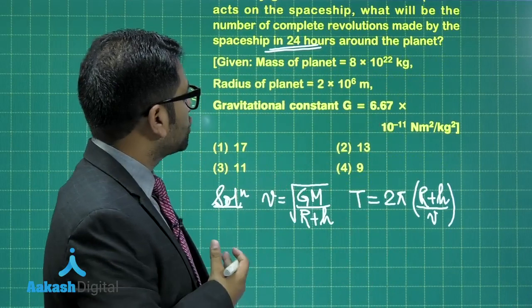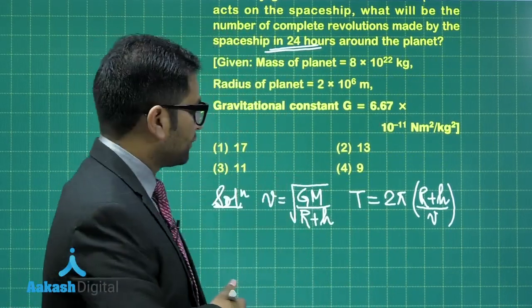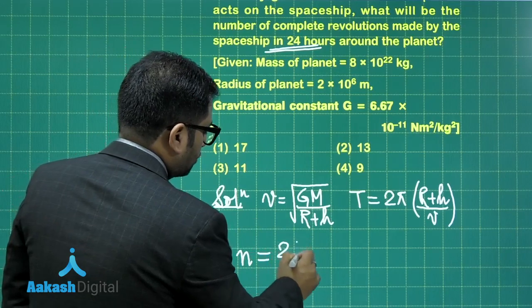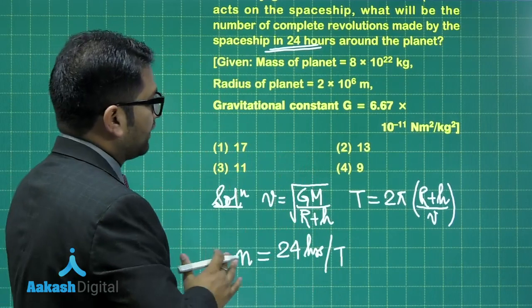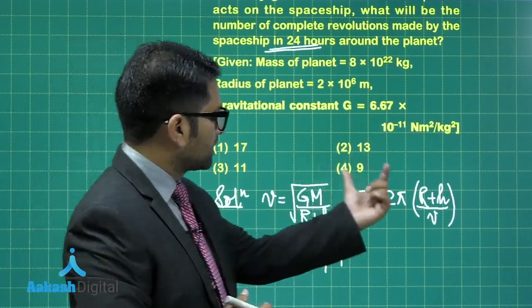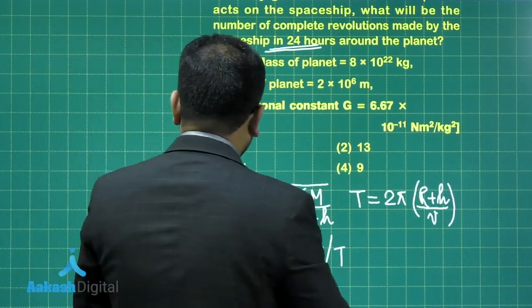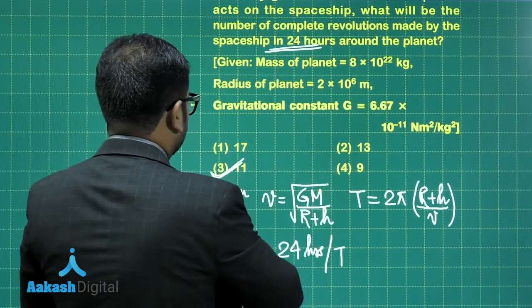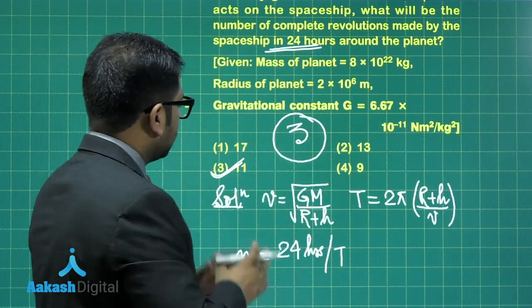We are supposed to calculate the number of revolutions this satellite makes in 24 hours. That number of revolutions, if I denote it by small n, is going to be 24 hours divided by T. Here you need to be careful in terms of units. This is in hours, so whatever time period you get, convert it into hours. You calculate all those things, and the answer would come very close to 11. Therefore, out of these given four options, 11 revolutions would be the correct answer, leading to option number 3.